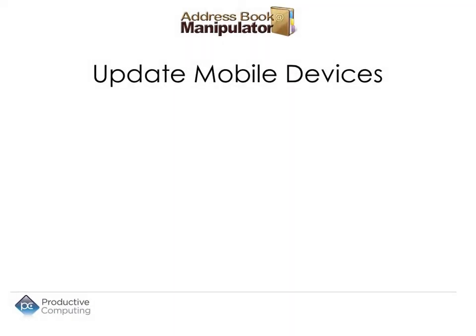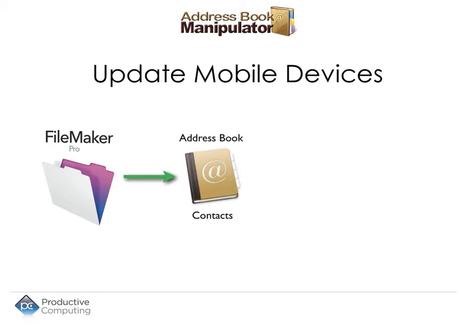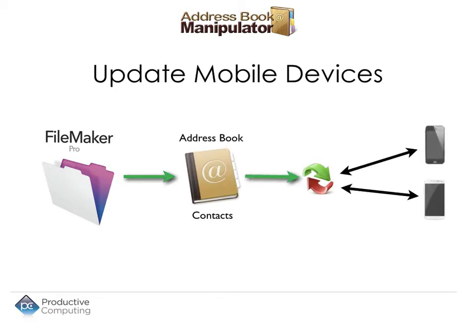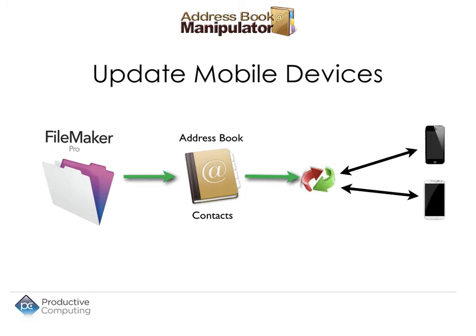Next, you can update your mobile devices. Data from FileMaker can be pushed to AddressBook, allowing you to update your mobile devices with your latest FileMaker data. Since AddressBook already has great syncing integration, once your FileMaker data is in AddressBook, you can sync with your mobile devices and have your FileMaker contacts virtually everywhere you need them.